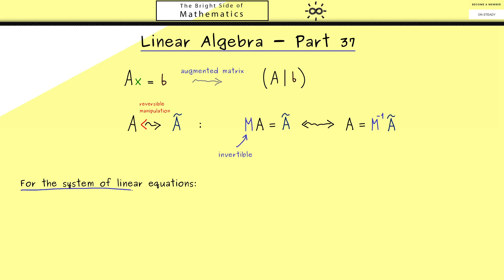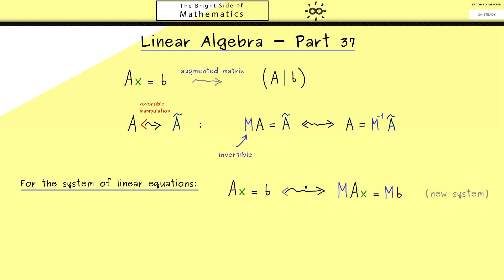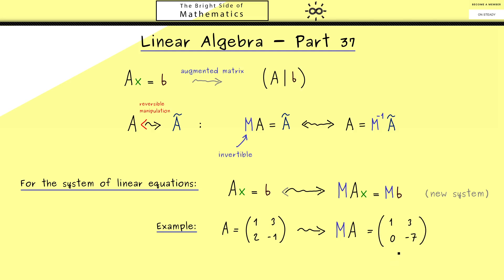We can also state this for the system of linear equations: we multiply the equation Ax = b by M from the left, so the new system reads M times A times x equals M times b. The idea is that this new system is simpler in the sense that it is easier to see the solution set. We already saw this in the last video, where we changed a system given by a matrix with entries 1, 3, 2, minus 1 by row operations to get a simpler form — specifically a triangle structure where below the diagonal we only find zeros.